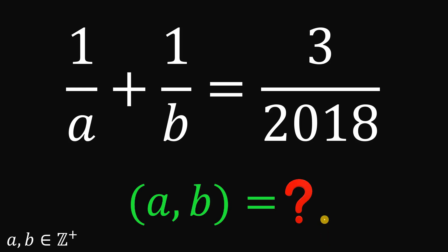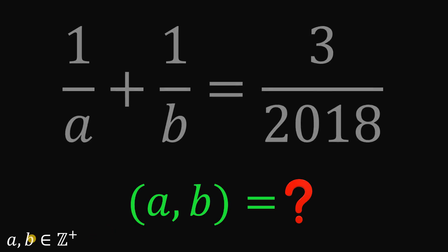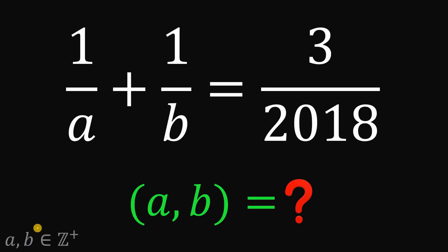For today's video, we will answer this question from Putnam on the year 2018. Given this equation 1 over A plus 1 over B equals 3 over 2018, wherein A and B are both positive integers, our goal is to find the pairs A comma B that satisfies this equation. You can pause this video if you want to give this problem a try.